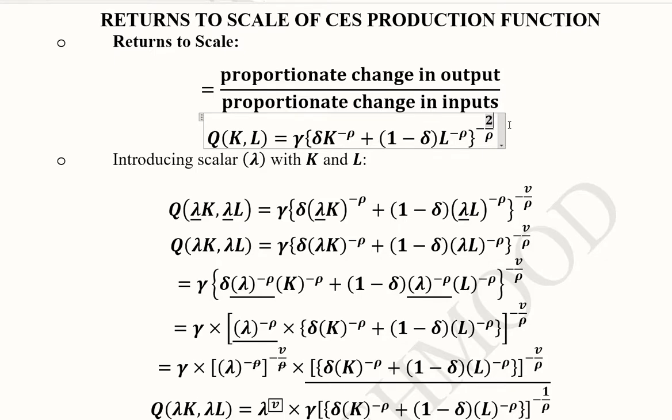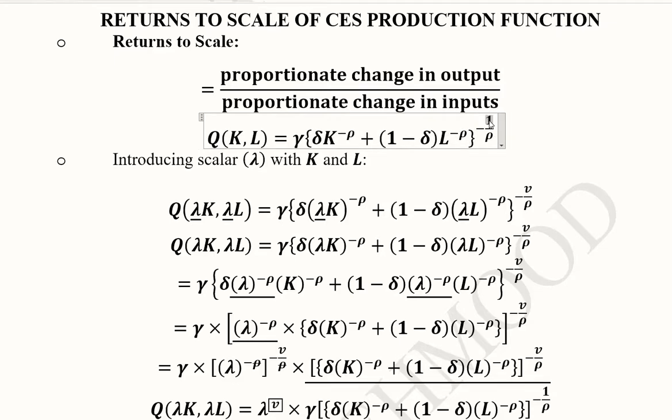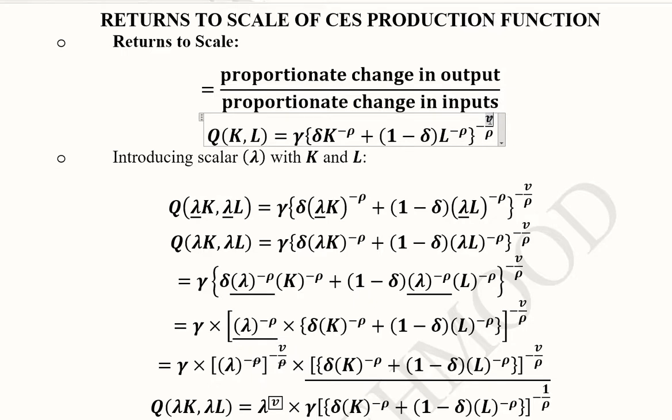For example, if it is 2 in the given numerical form, then we can say the value of v is greater than 1, meaning we have increasing returns to scale. If it is equal to 1, then we have constant returns to scale. If it is less than 1, for example 0.5, then we have a case of decreasing returns to scale. This is the utility and economic significance of v in the CES production function.